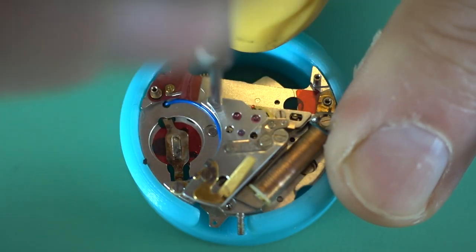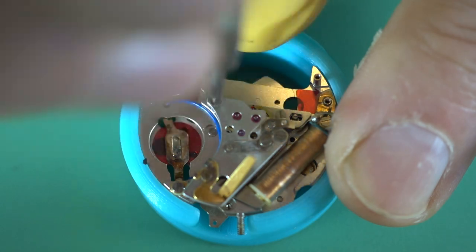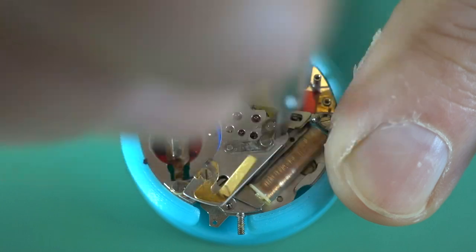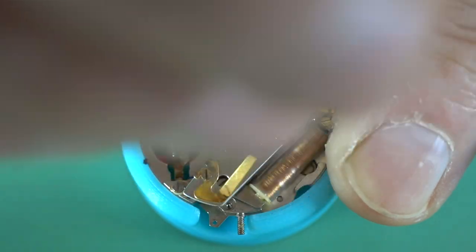We're just taking off the top train plate now, because the screw for the bottom of the coil is actually hidden underneath all that. So we'll just take that off now.